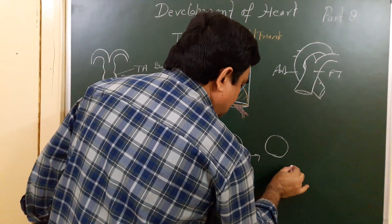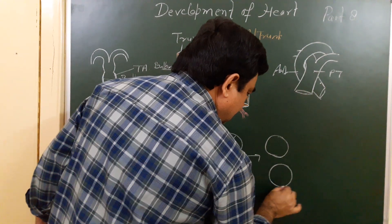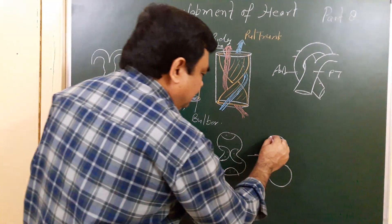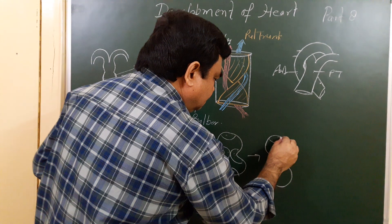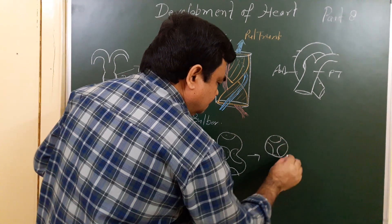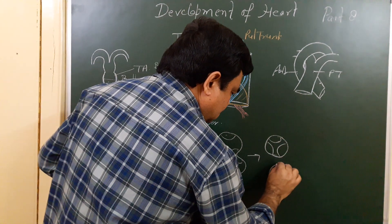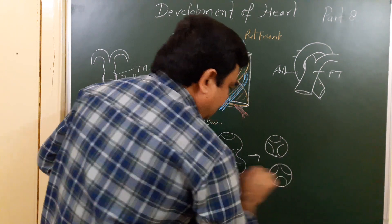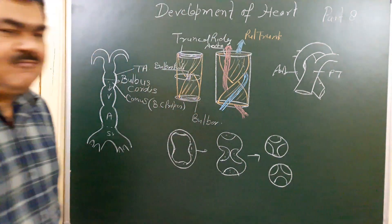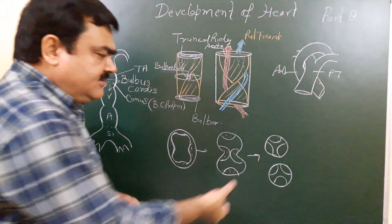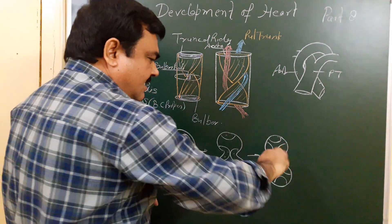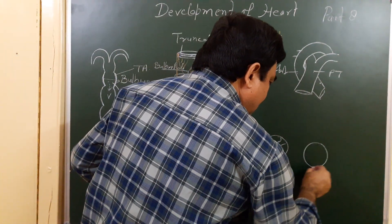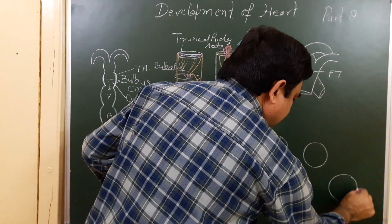The endocardial cushion gradually forms the valve. At the 120 mm stage, the position of the wall is changed.